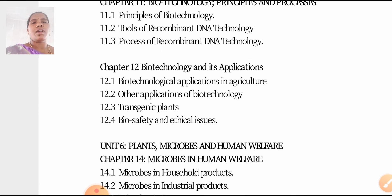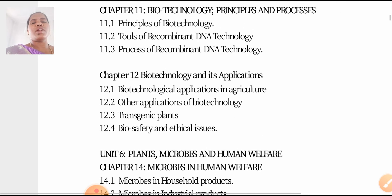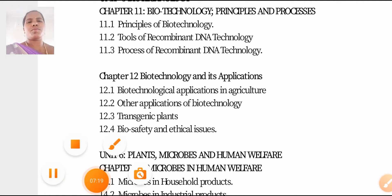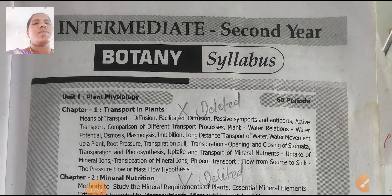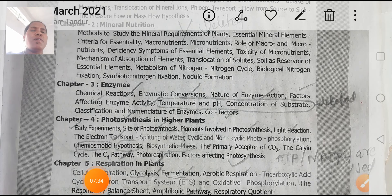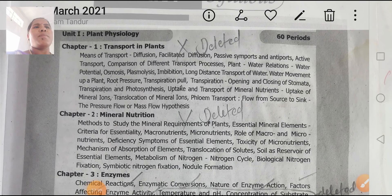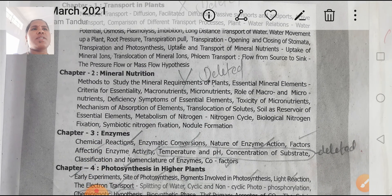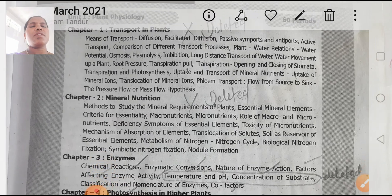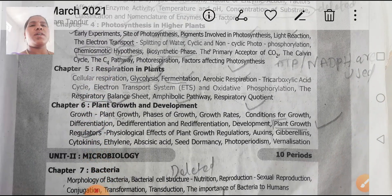Looking at any units overall for Botany second year for Bridge Course and BiPC students — there are 6 units for BiPC second year students. From the textbook, Unit 1 is Plant Physiology, which contains 6 chapters: Chapter 1, Chapter 2, Chapter 3, Chapter 4, Chapter 5, and Chapter 6. Unit 1 has 6 chapters in total.